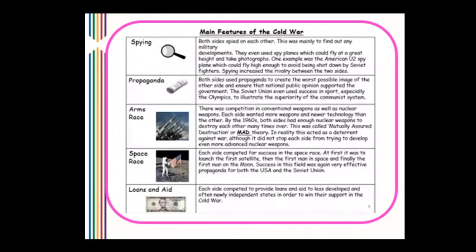This diagram outlines some of the main key features of the Cold War. On spying: both sides spied on each other, mainly to find out about military developments. America used something called the U-2 spy plane, which could fly high enough to avoid being shot down by Soviet fighters. Spying increased the rivalry between the two sides. Both sides also used propaganda to create the worst possible image of the other side and ensure that national public opinion supported the government.